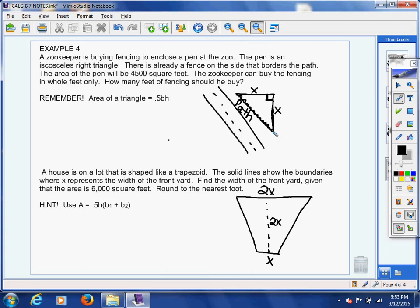The zookeeper can buy the fencing in whole feet only. Whole feet only. Underline that twice because we need our attention to be dragged there. How many feet of fencing should he buy?